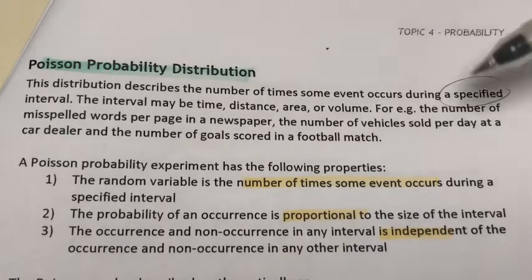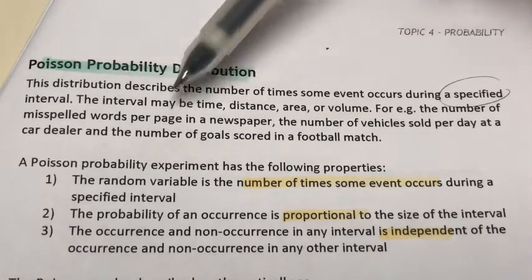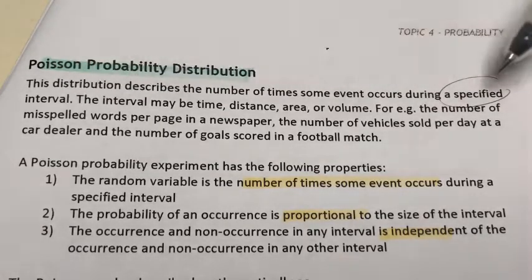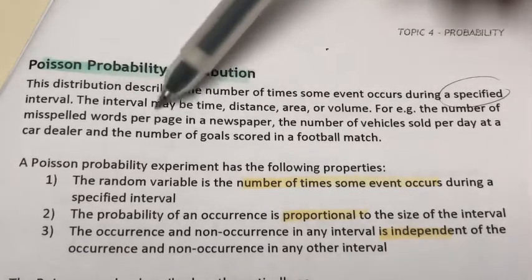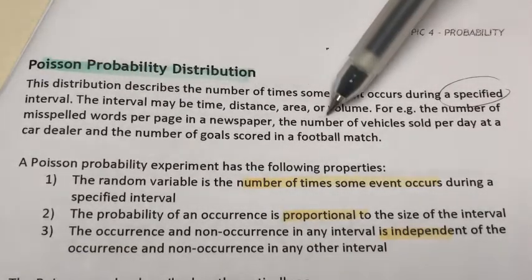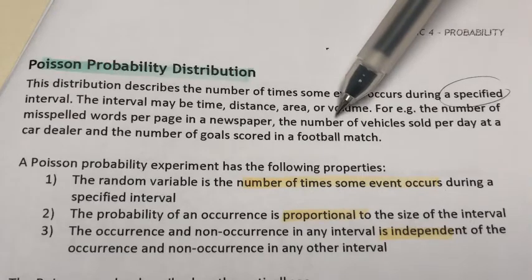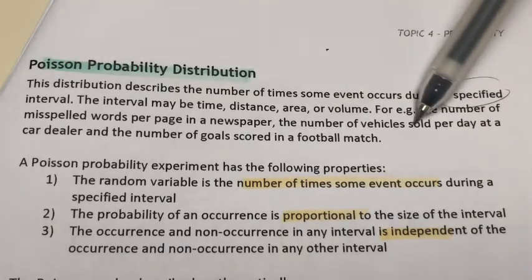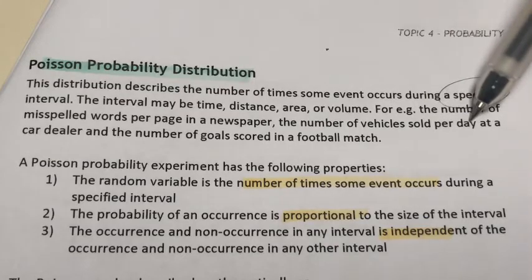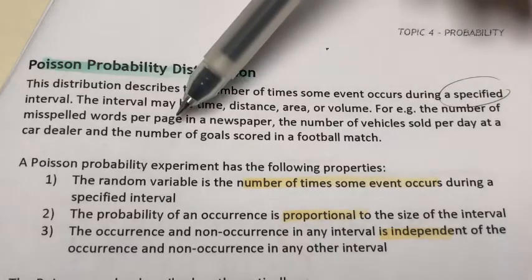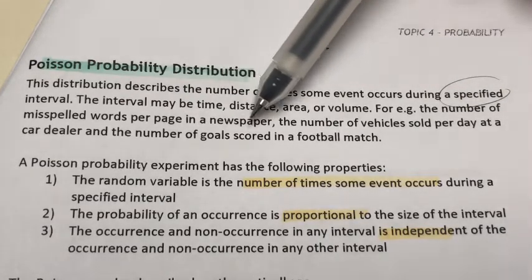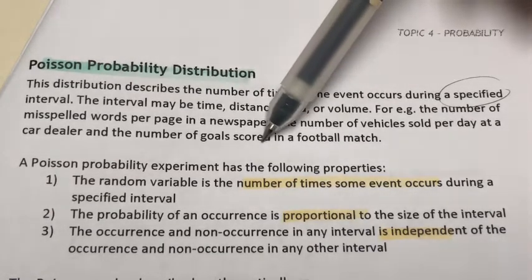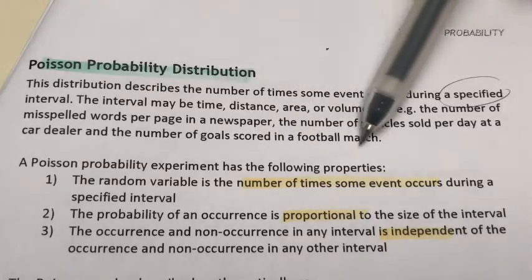For instance, the number of misspelled words per page — the occurrence is misspelled words and the interval is per page. Second example: the number of vehicles sold a day — occurrence is vehicles sold, interval is one day. And the number of goals scored in a football match — occurrence is goals scored, interval is one football match.